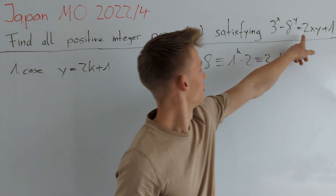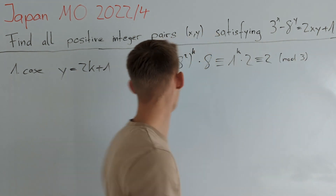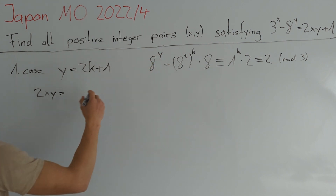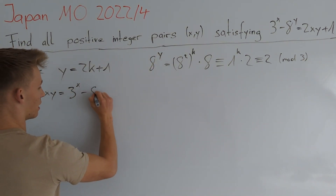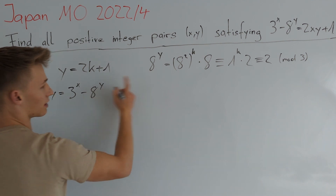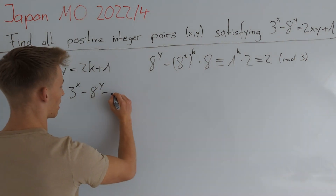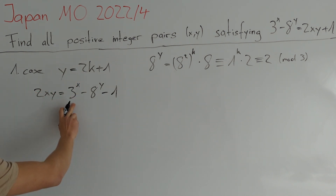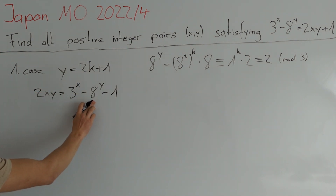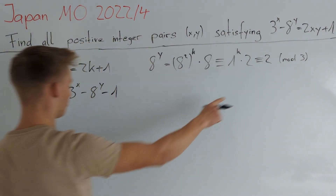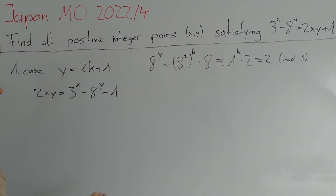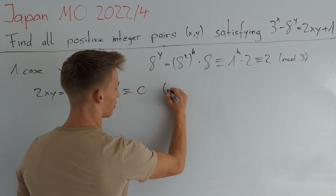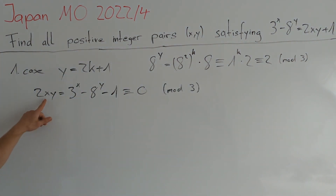Now we can write 2xy equals 3 to the power of x minus 8 to the power of y minus 1. Since x is a positive integer, 3 to the power of x is congruent to 0 mod 3, 8 to the power of y is congruent to 2 mod 3, and 1 is congruent to 1 mod 3. So we conclude that 2xy is congruent to 0 mod 3, which means that 3 must divide x or y.